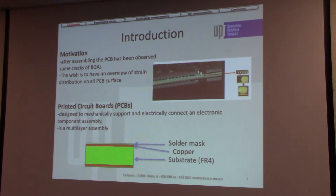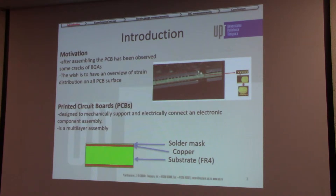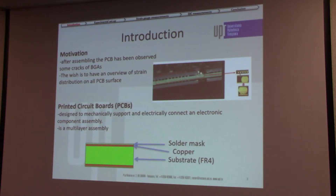Vibration, temperature load, and shocks can cause problems observed in the area of BGAs and surface mounting. Cracks can be observed in the area of microprocessors. The goal was to find a method to visualize the distribution of strain across the entire PCB surface in order to avoid placement of sensitive components like microprocessors in high-strain areas.